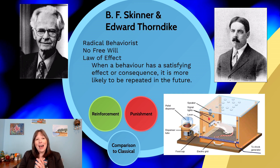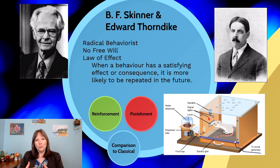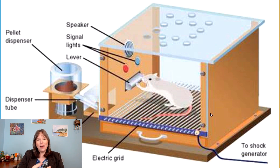Skinner was very good at building things, and one of the things he was well known for — aside from the air crib he built for his daughter — was the operant conditioning chamber, sometimes called the Skinner box, though that wasn't his preferred name. In this chamber an animal, either a rat or a pigeon, would be placed. The diagram shows a rat with a food cup, a dispenser tube, a lever, signal lights, and a speaker. The rat may learn that pressing the lever when one light is lit dispenses a food pellet.